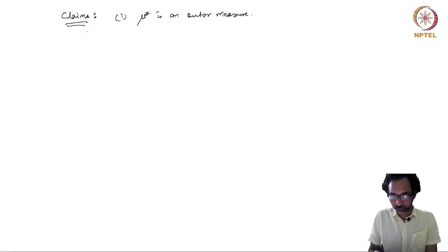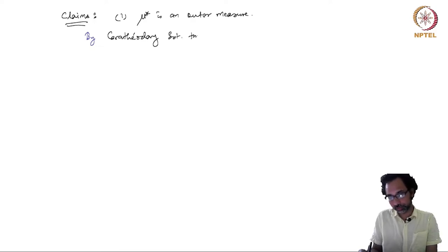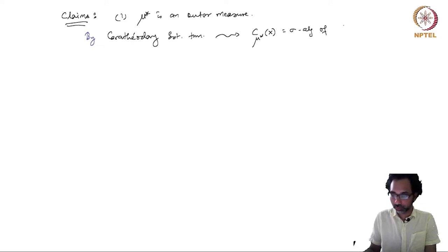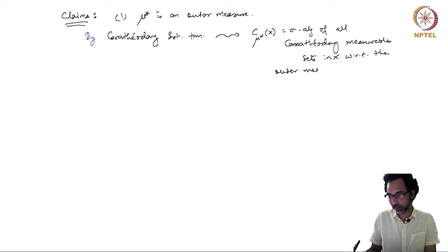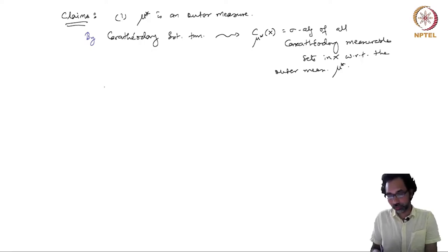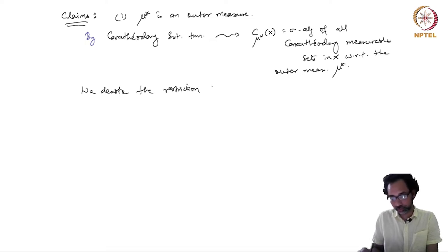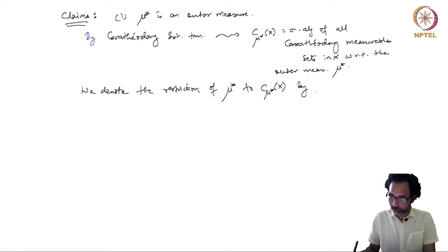If μ* is an outer measure, by Carathéodory's extension theorem we get Σ(μ*, X), which is the sigma algebra of all Carathéodory measurable sets in X with respect to the outer measure μ*. We denote the restriction of μ* to Σ(μ*, X); this is a measure, denoted by μ.